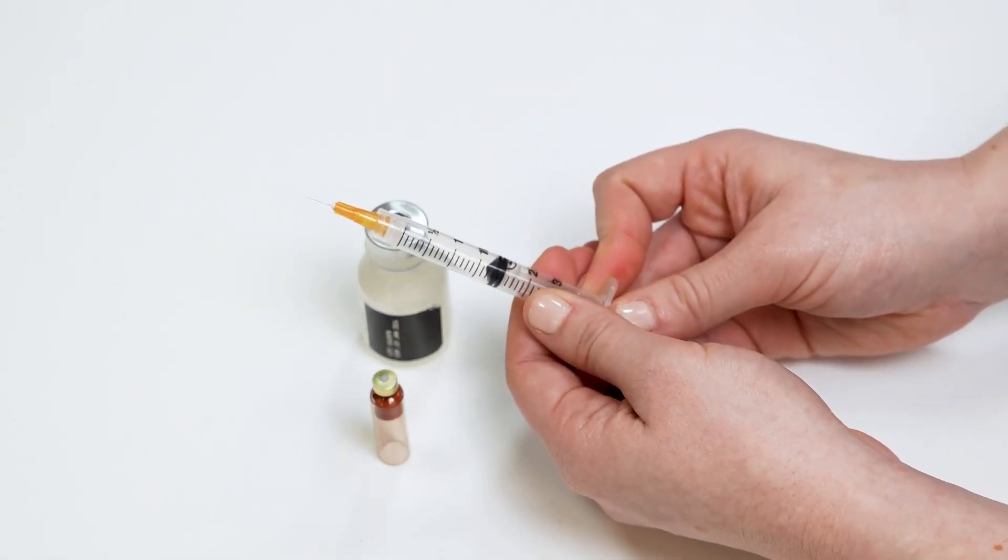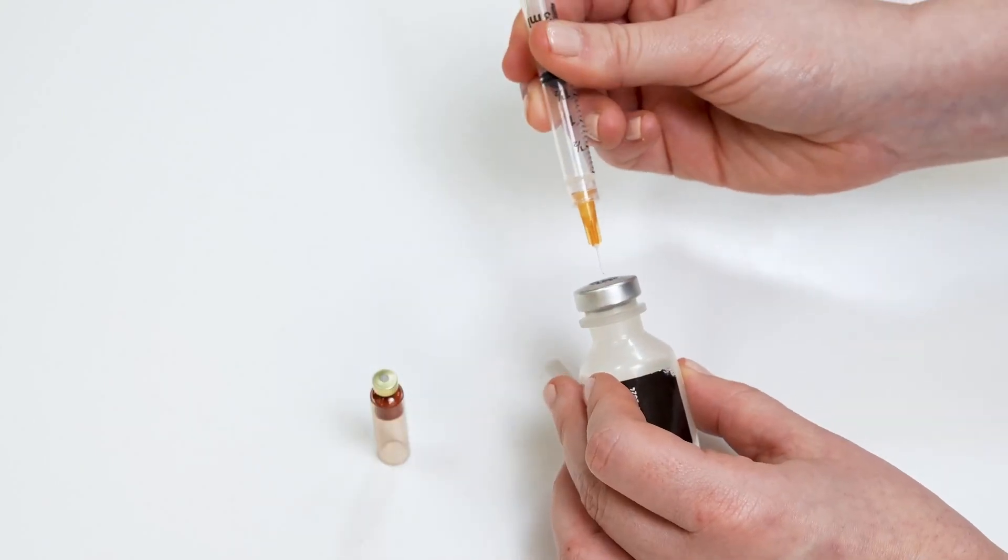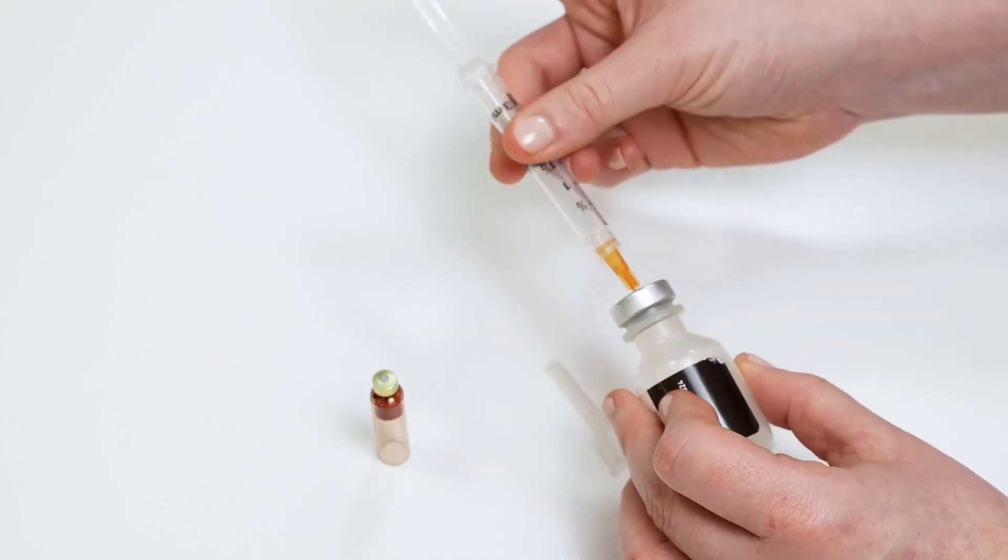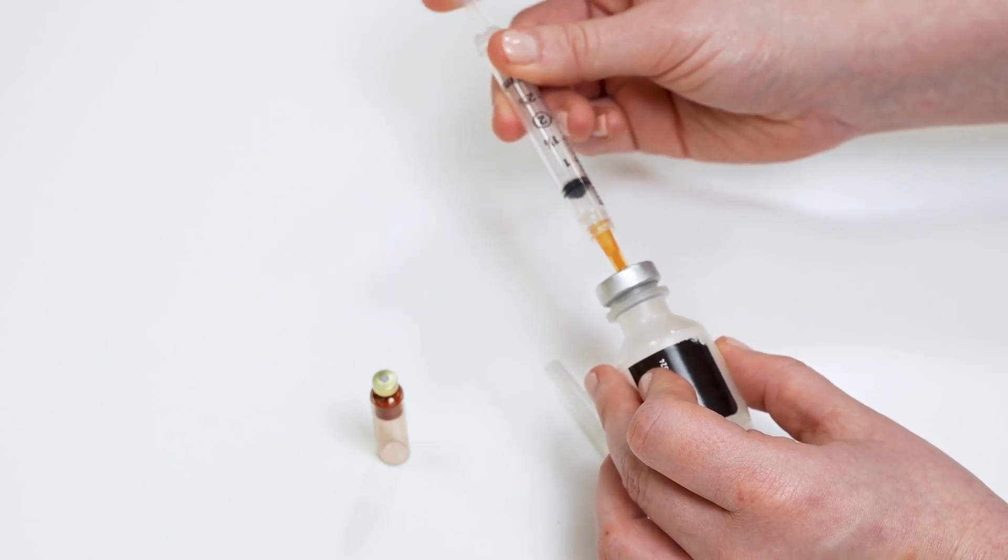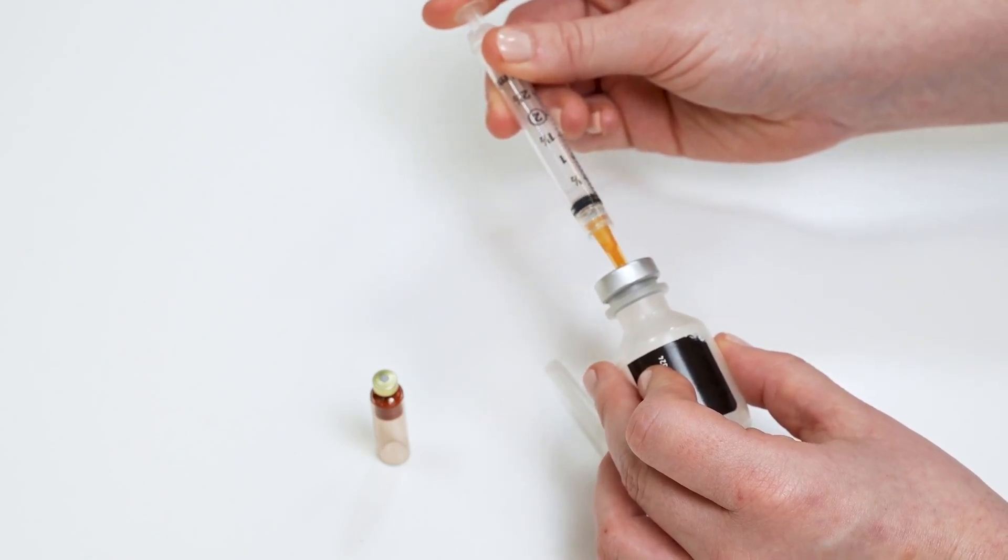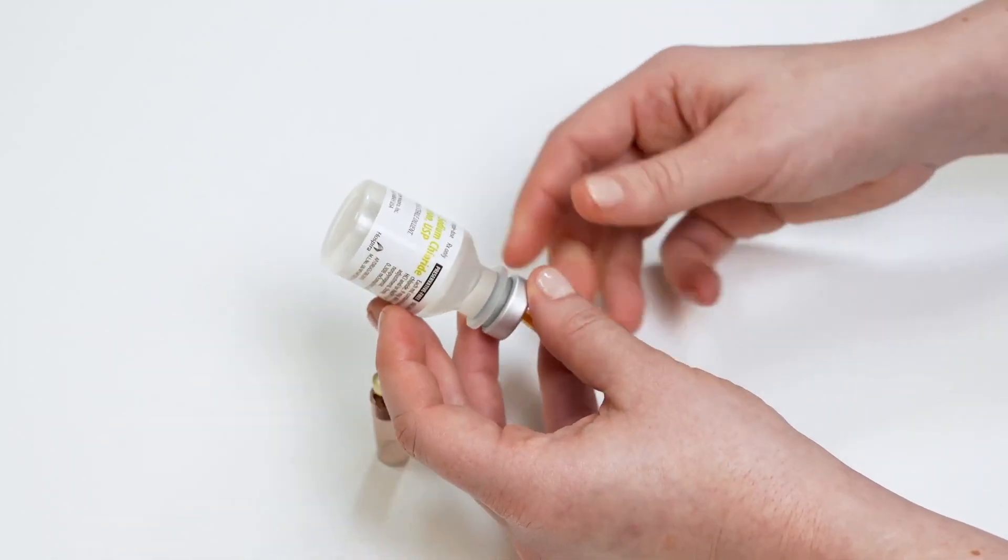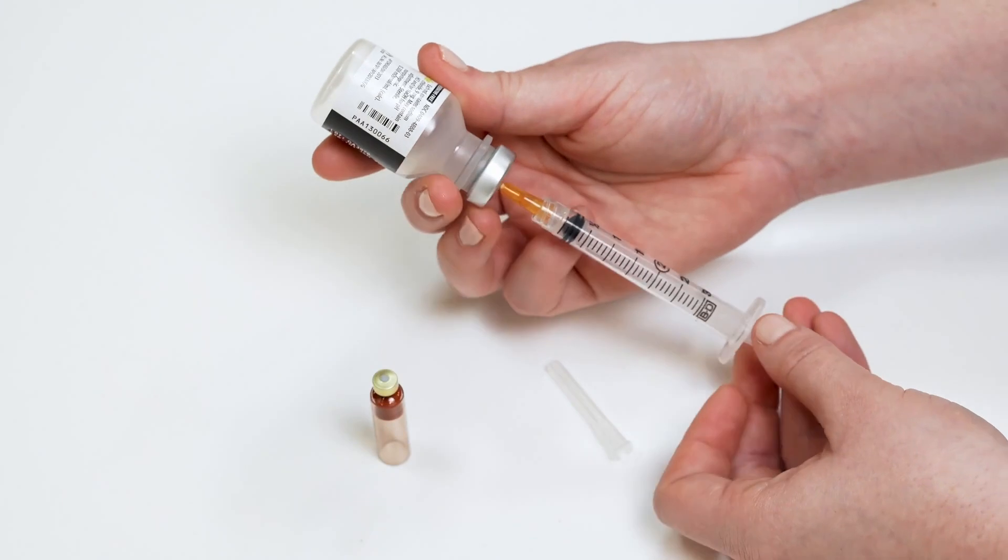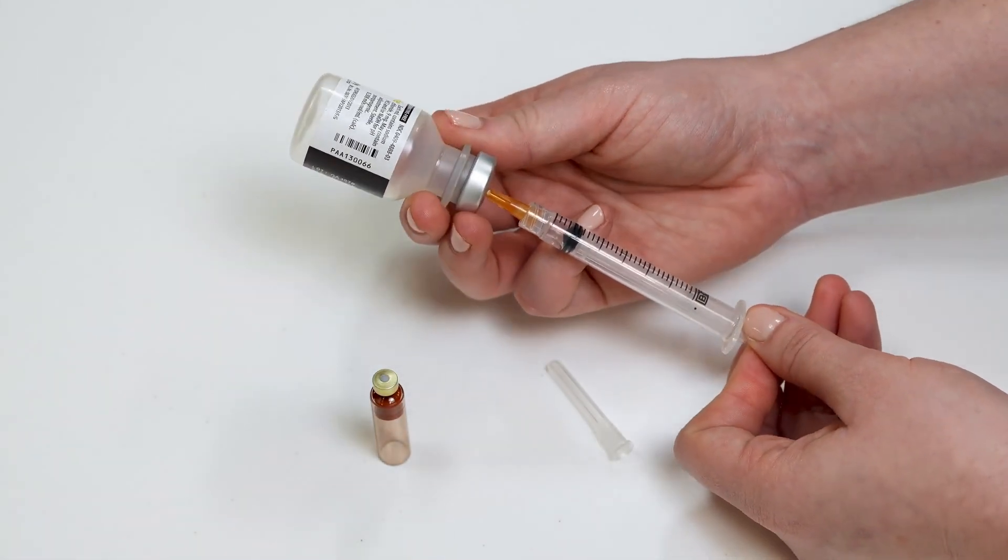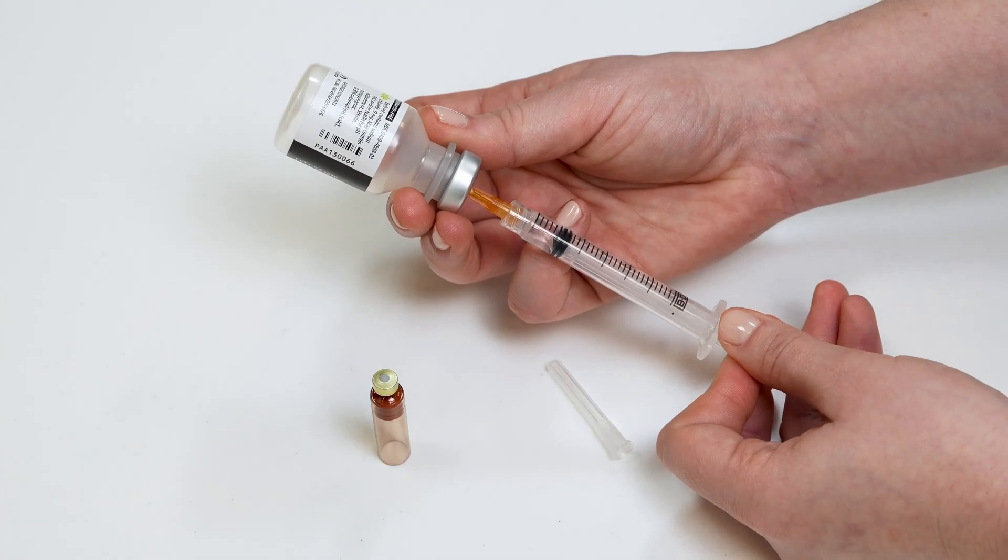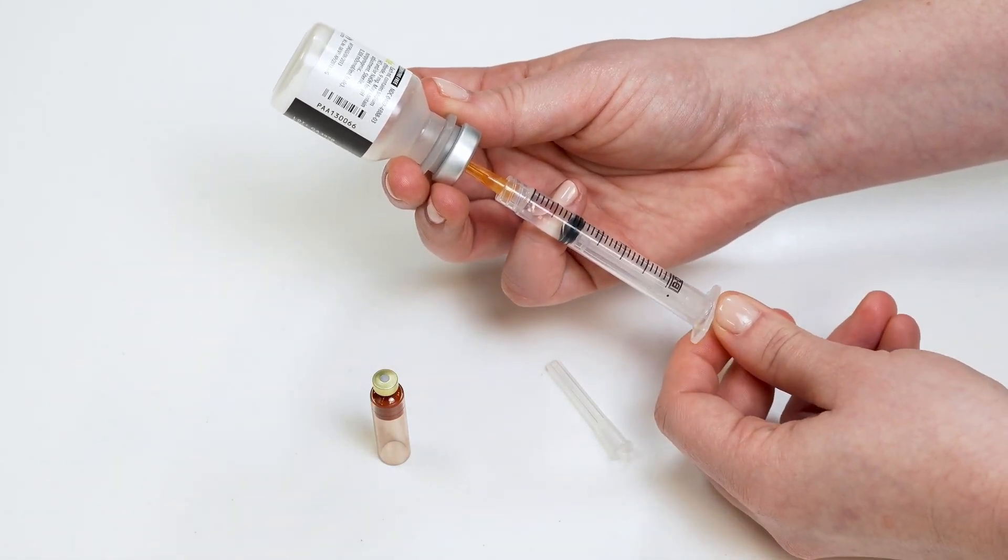Insert the syringe into the insulin vial. Push down the syringe plunger rod to fill the vial with the air from the syringe. Keeping the syringe in the vial, carefully and slowly invert the insulin vial and syringe. Pull back on the syringe plunger rod to fill the syringe with about 1.8 ml of insulin.